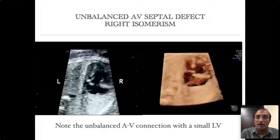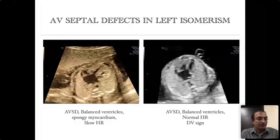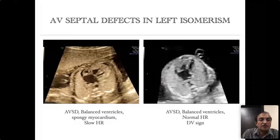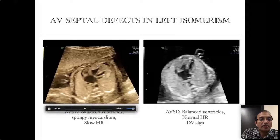This is another type of AV septal defect where you see two good-sized ventricles, but notice how slow the heart rate is. This is typically the type of AV septal defect found in left isomerism.